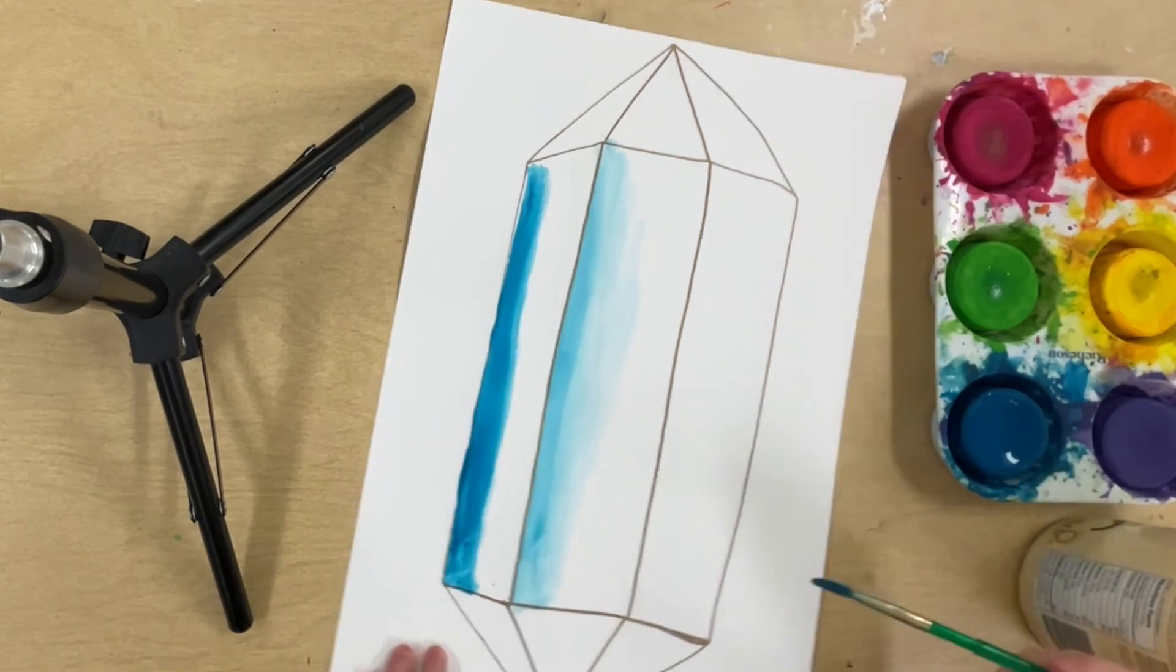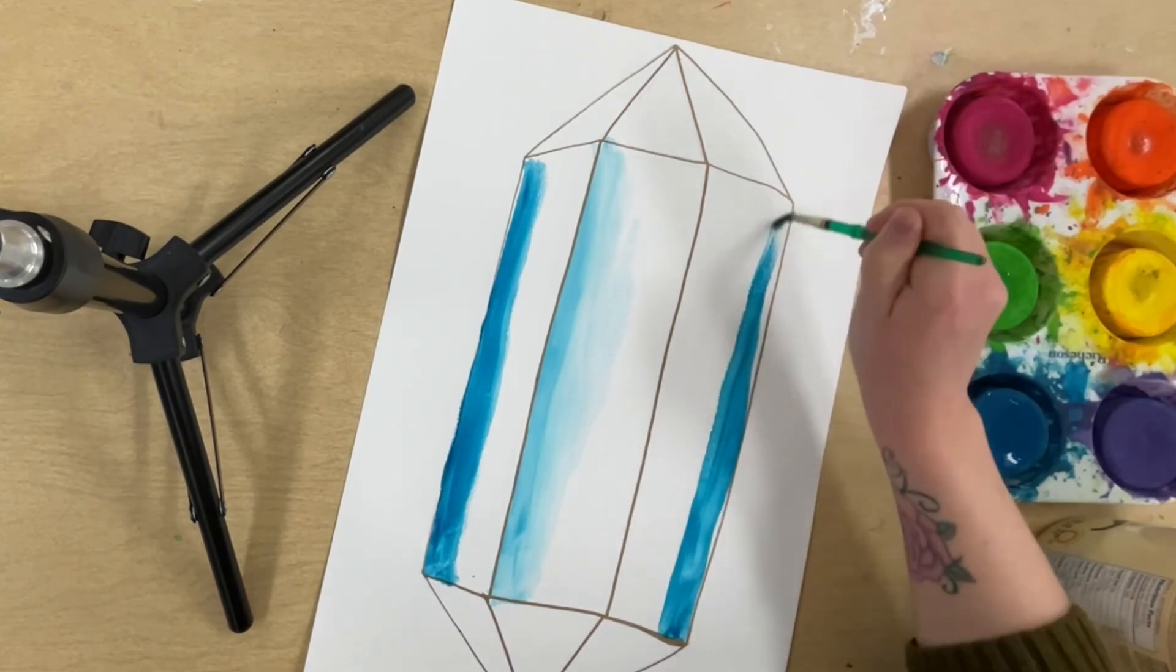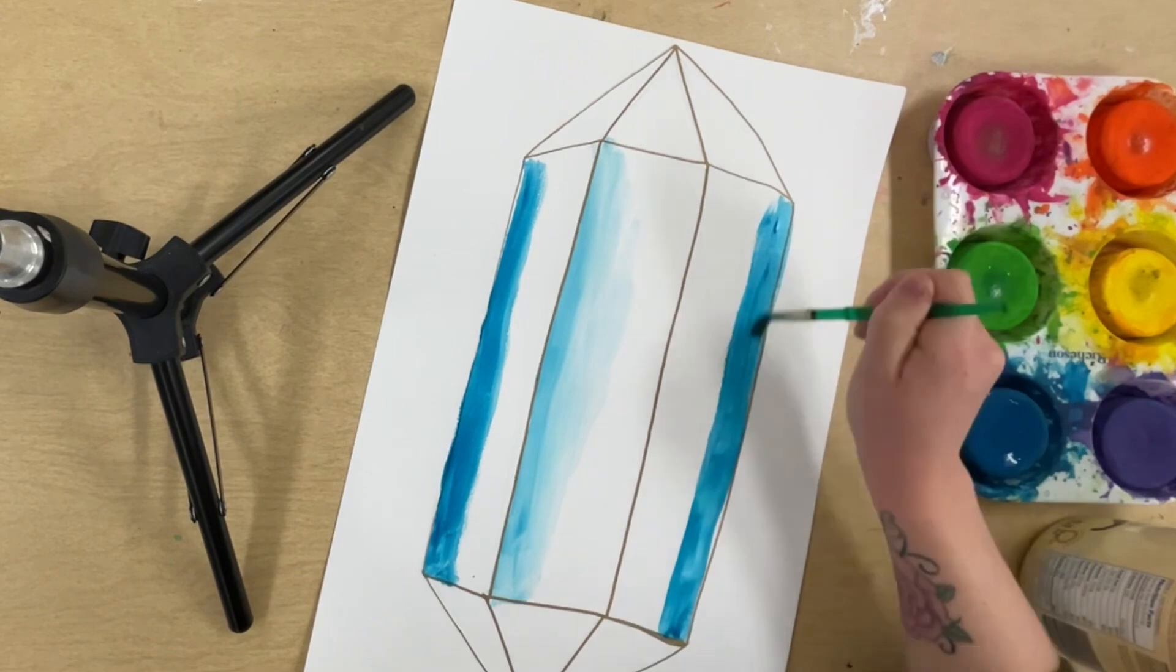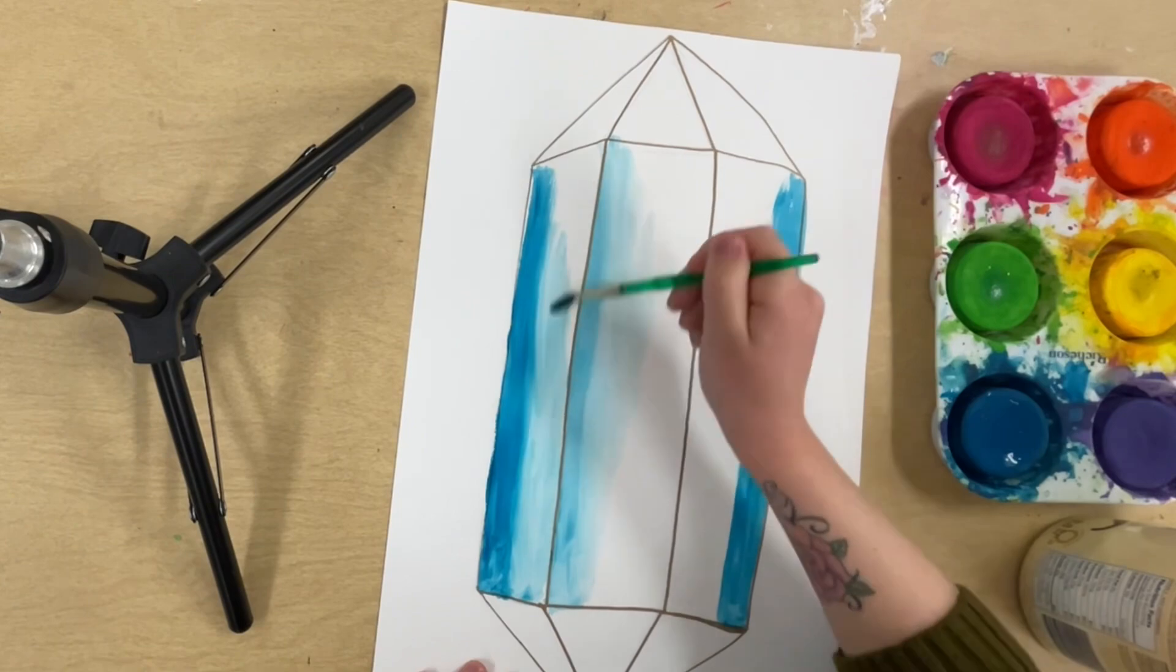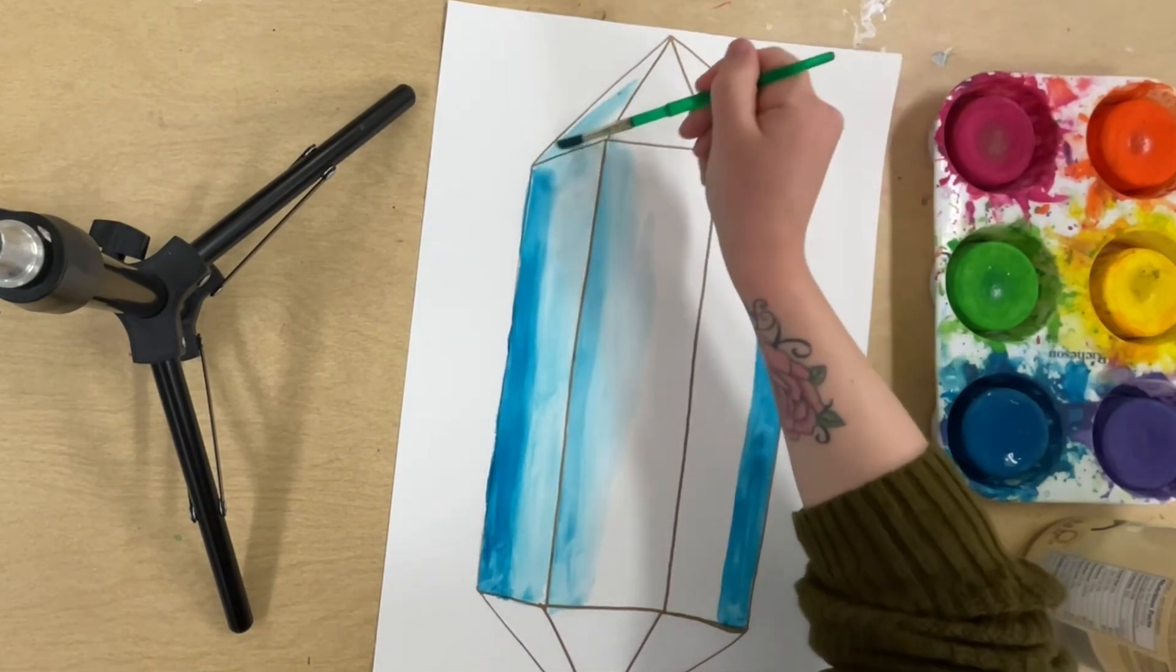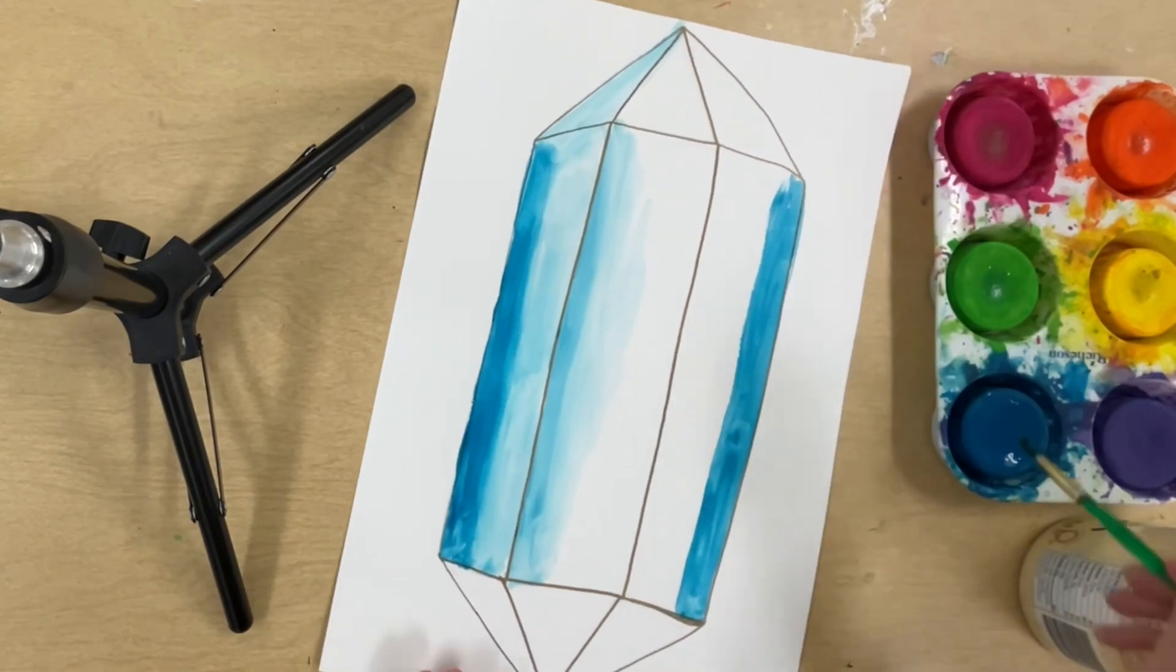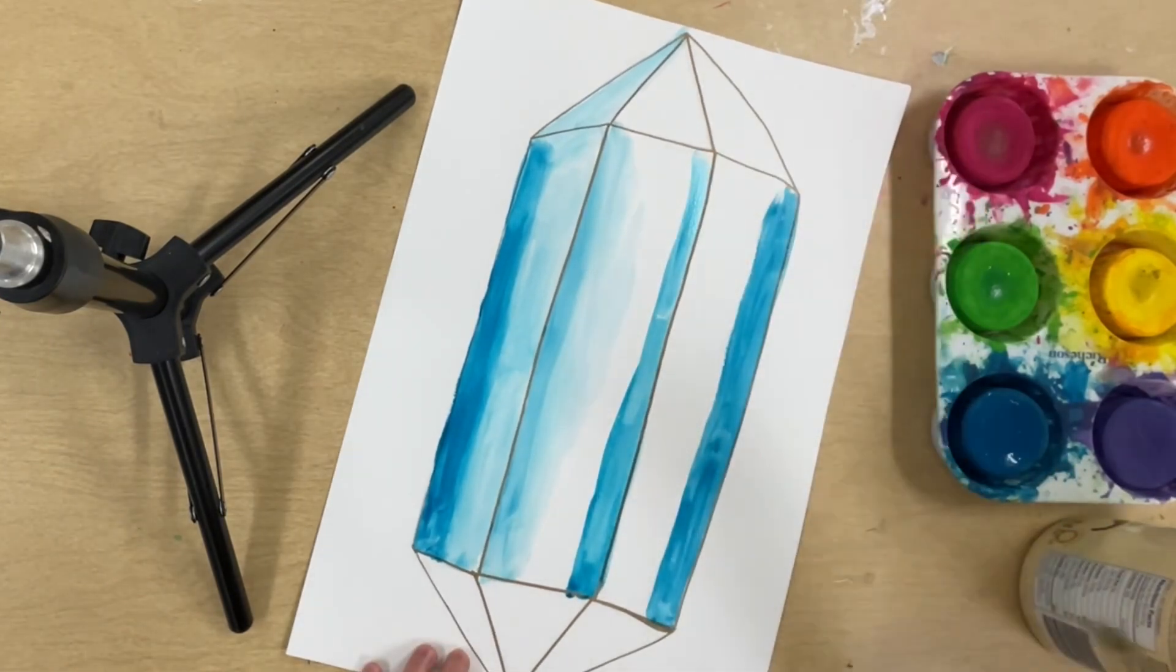So a trick when you're using paint like this—this is tempera cakes, but this works for watercolor too—is that less water and more paint equals a darker value, and more water and less paint equals a lighter value. And it's always a lot easier sometimes to work from light to dark, because it's a lot easier to make light parts darker than it is to make dark parts lighter.